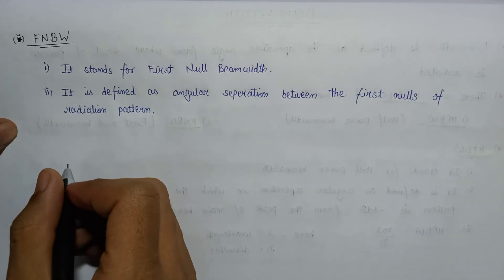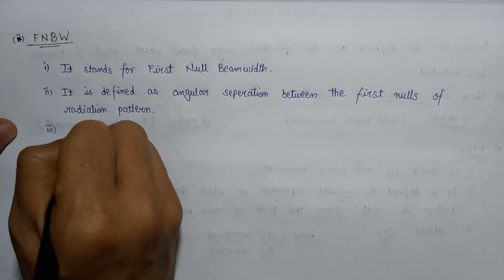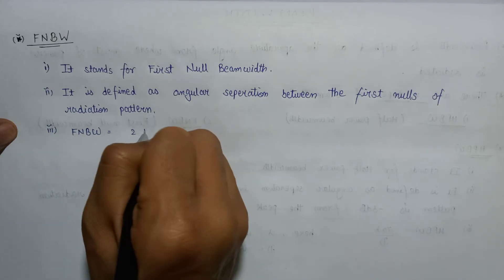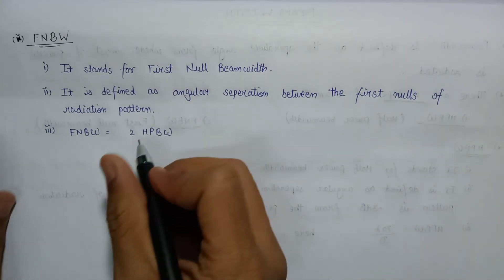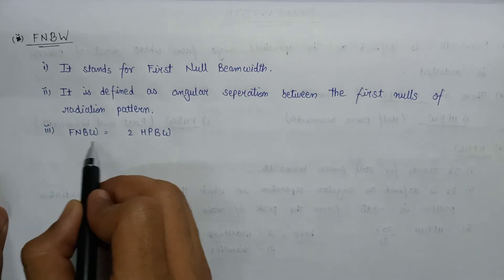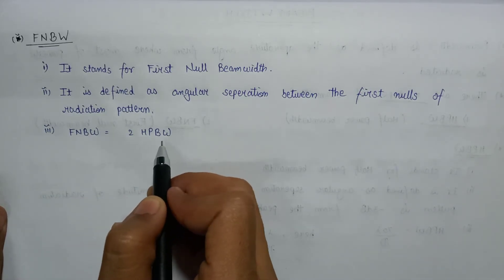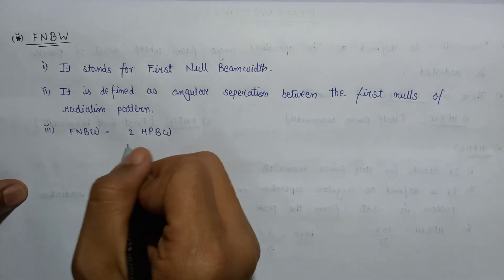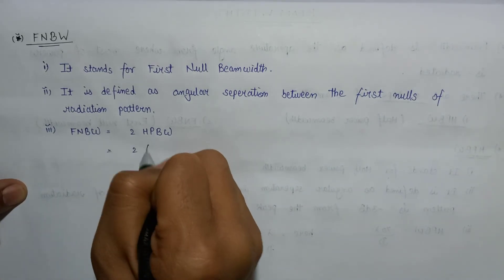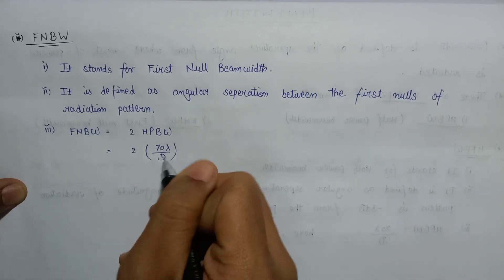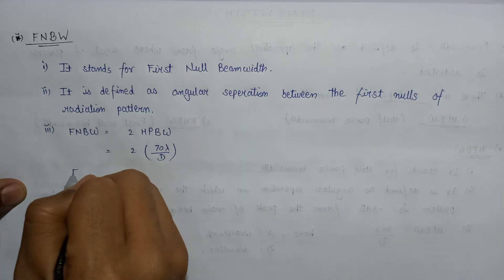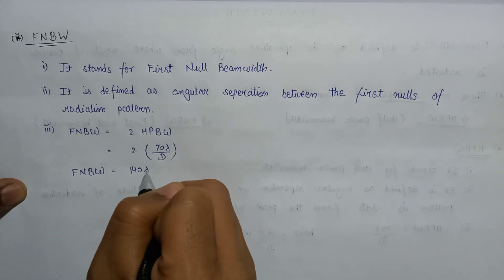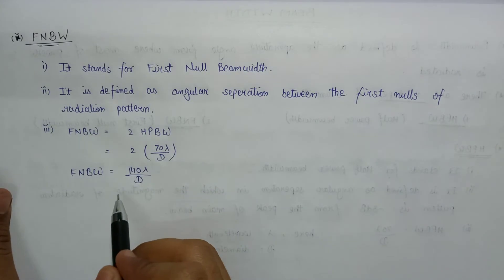The representation for first null beam width is FNBW, which is equal to twice of HPBW. Since HPBW is equal to 70 lambda over D, replacing its value we get 2 multiplied by 70 lambda over D. So the final expression for first null beam width comes out to be 140 lambda over D.